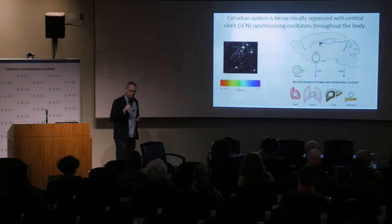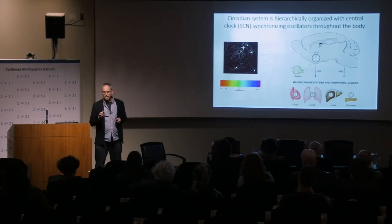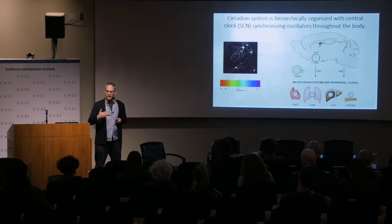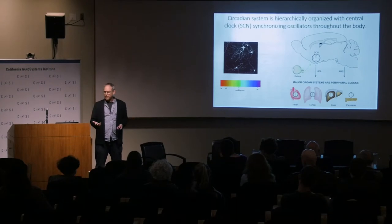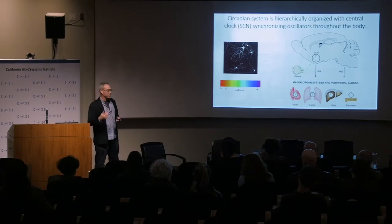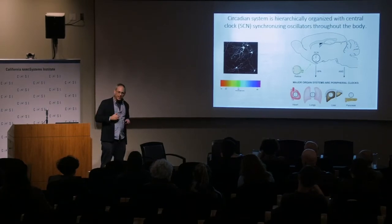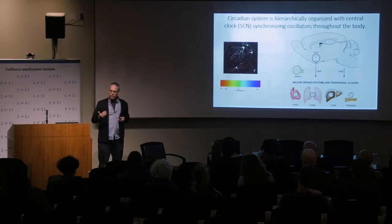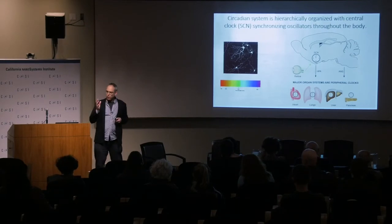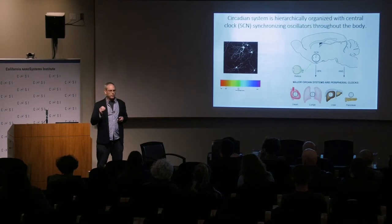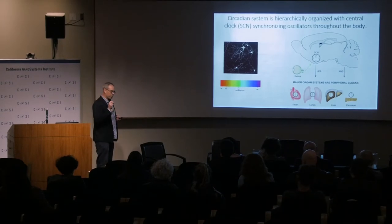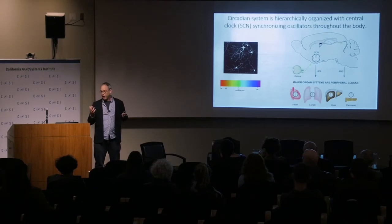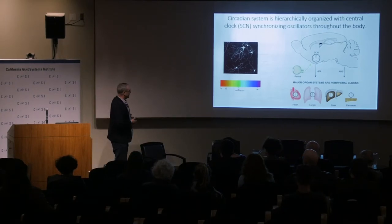Another major discovery from this area of research is that we have a separate sensory system in our retinas that detects light into this clock. Because what good is a timing system if it can't be synchronized to local time? The clock in your body has to be reset every day, and light is the cue that does that. But it's not from the rods and cones of the visual system — there's a separate light detection system, which is really cool on a molecular level. It's very similar to what's found in a fly — a very ancient system.